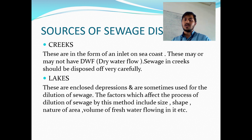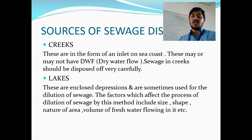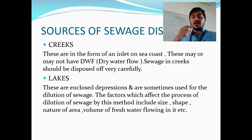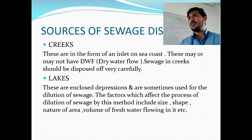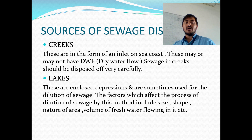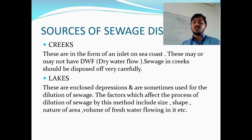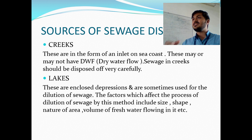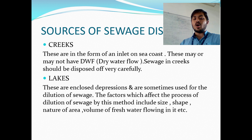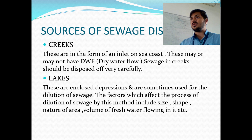The sources of sewage dispersion are: creeks, which are inlets on the seacoast — they may not have dry water flow but sewage dispersion should be done carefully. Lakes, which are enclosed bodies used for dilution of sewage. The factors affecting the dilution process in lakes include the size, area, volume of fresh water, and temperature.